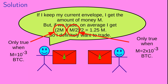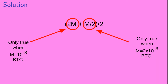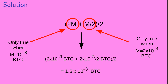However, in that expression the first term 2m is only valid when m = 10⁻³ bitcoin, and the second term m/2 is only valid when m = 2×10⁻³ bitcoin. So if we substitute in the values of m that are valid for each of the two terms, the expression actually simplifies down to 1.5×10⁻³ bitcoin — the same as the average value of m. This shows us that by trading, you neither get an advantage nor a disadvantage compared to just opening the envelope in your hand.